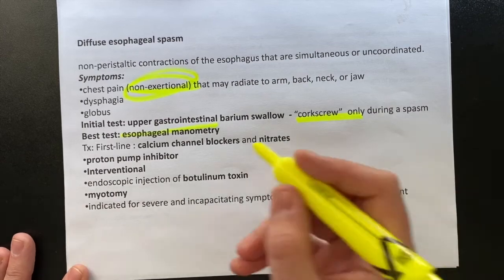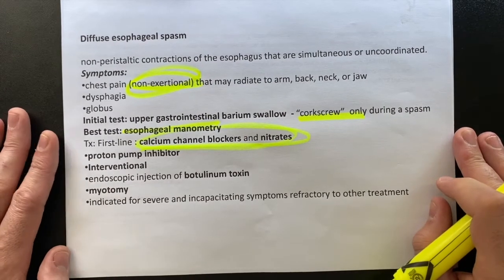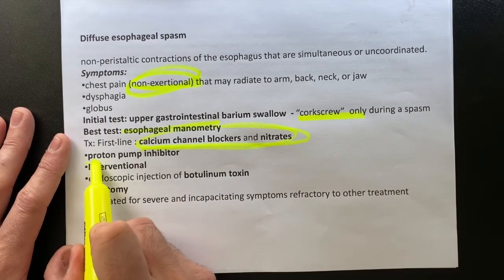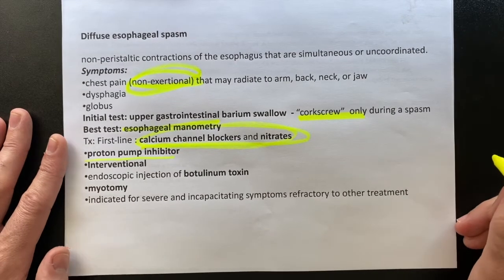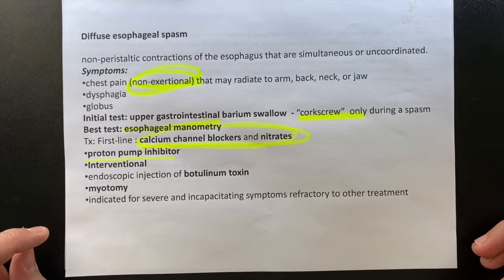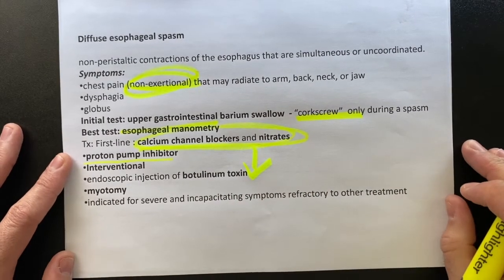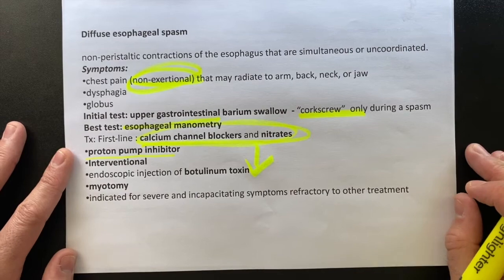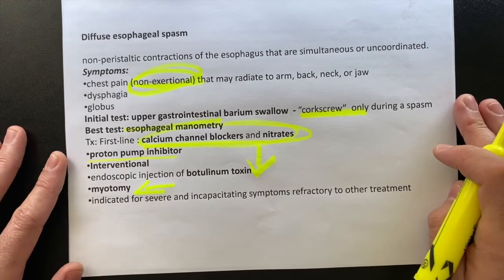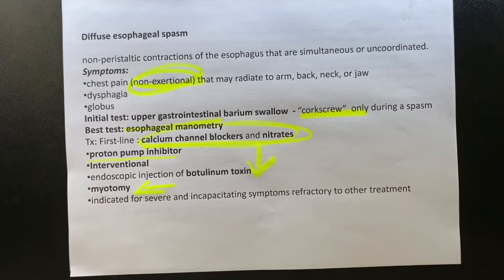Treatment for diffuse esophageal spasm includes calcium channel blockers and nitrates — medications to relax the esophagus and reduce the spasm. Together with calcium channel blockers, you can prescribe a PPI, but on exam questions, calcium channel blockers will be the most common answer choice. If that is not helping, you move to injection of botulinum toxin to relax the esophagus. If that is still not helping, you use the more invasive procedure: myotomy.